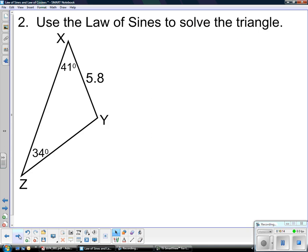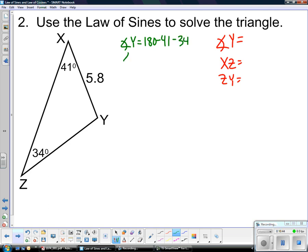Next we're given angle, angle, and the non-included side. So again we need to solve the triangle. We need to find angle y, side x, z, and z, y. Again to find angle y, that's 180 minus 41 minus 34. So angle y is going to be 105.